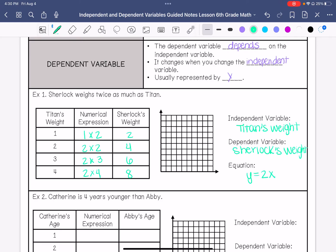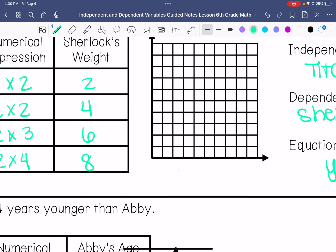I'm going to label my x-axis Titan's weight and my y-axis Sherlock's weight. When Titan's weight is at 1, Sherlock is at 2. When Titan is at 2, Sherlock is at 4.